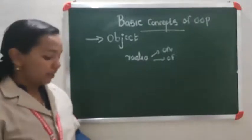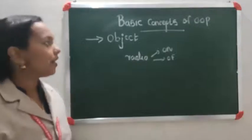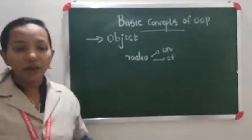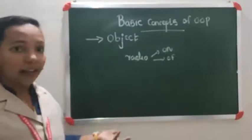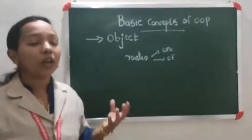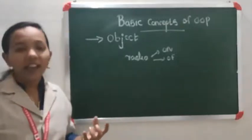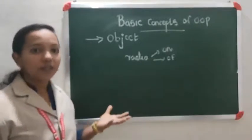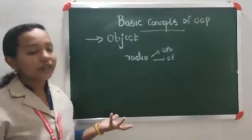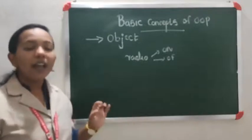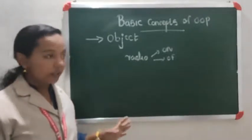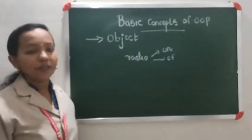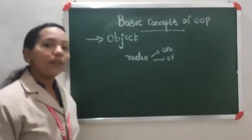Anything that we see around us is considered as an object — for example, radio, a student, a bike or motorbike. The main advantage of object-oriented programming is we can easily relate with real-life examples. Every object has its own characteristics and also behavior or state. According to the state and behavior, we can specify the activities of that object. That is the first basic concept.